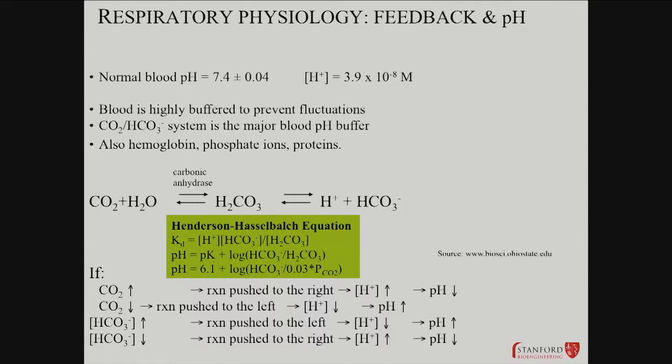pH is tightly regulated — it's usually about 7.4, plus or minus about 0.04. It's a little lower in cerebrospinal fluid, about 7.2. Blood is very highly buffered. There are many things that are partially occupied by protons, and a little shift in either direction will cause them to change their proton occupancy, resulting in not much overall change in blood pH.